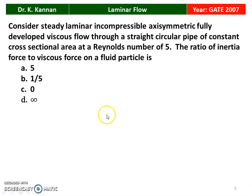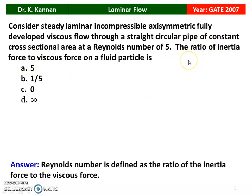Next question from the 2007 question paper: consider steady laminar incompressible axisymmetric fully developed viscous flow through a straight circular pipe of constant cross-sectional area at a Reynolds number of 5. The ratio of inertia force to viscous force of the fluid particle is — options are 5, 1/5, 0, and infinity. Since Reynolds number is defined as the ratio of inertia force to viscous force, and Reynolds number is given as 5, the answer is 5.